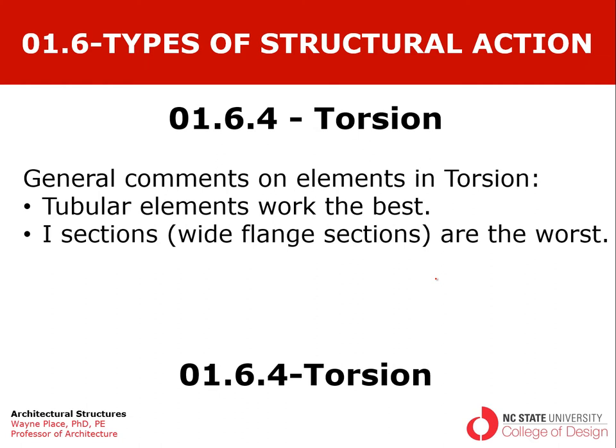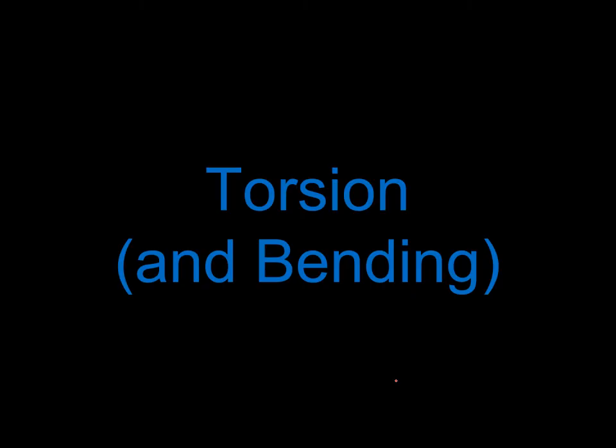Tubular elements work better than any other in terms of resisting torsional influences, and I-sections are among the worst. We're going to talk about torsion and often it's going to be torsion in conjunction with bending, because that's a fairly common situation, but there can be situations where we have pure torsion. It's pretty uncommon in architecture, but we find it on the drivetrains of automobiles where a torque is applied to one end of a tube and that tube is rotated and used as part of the drivetrain.